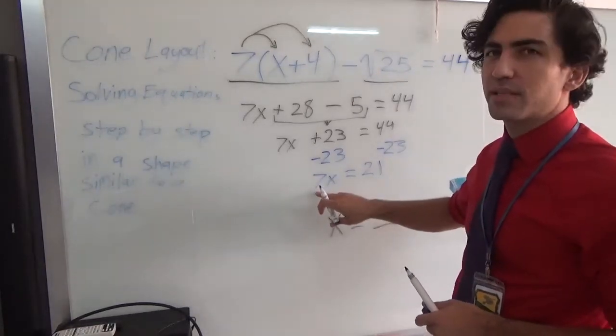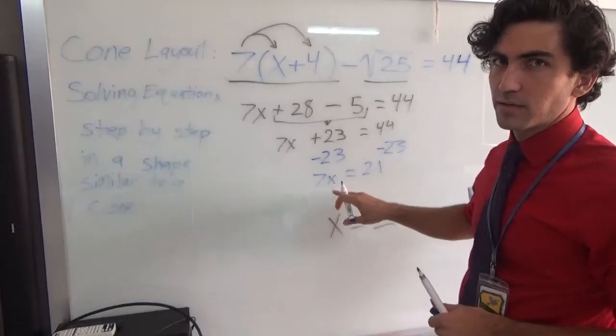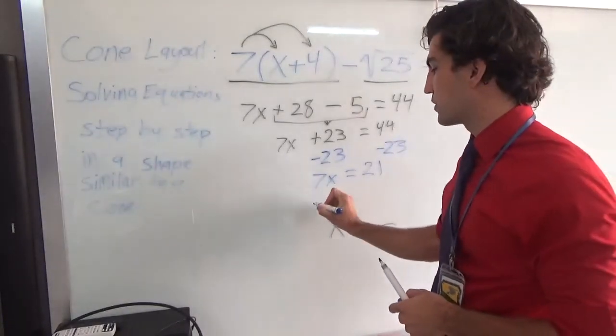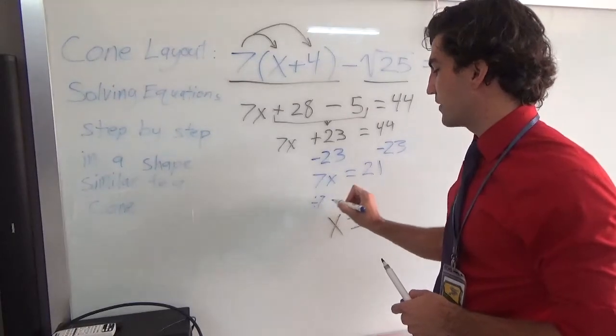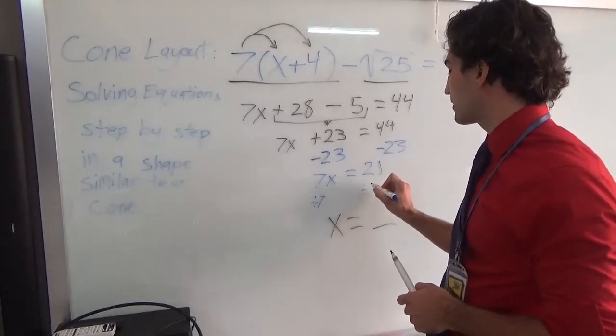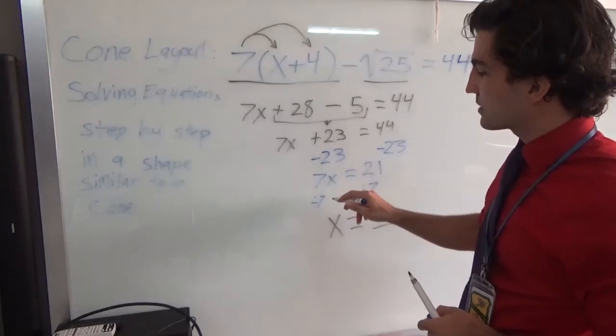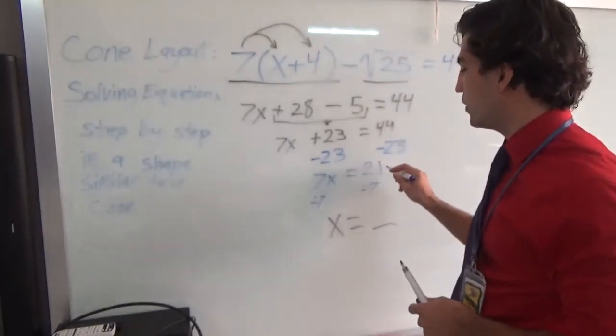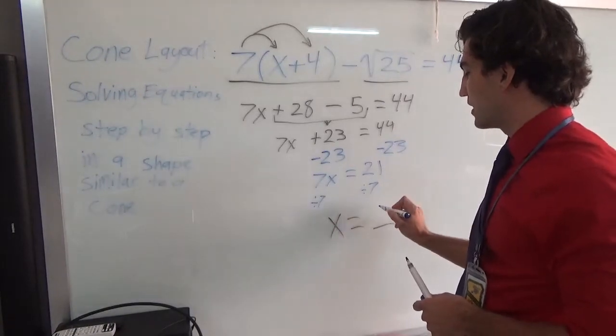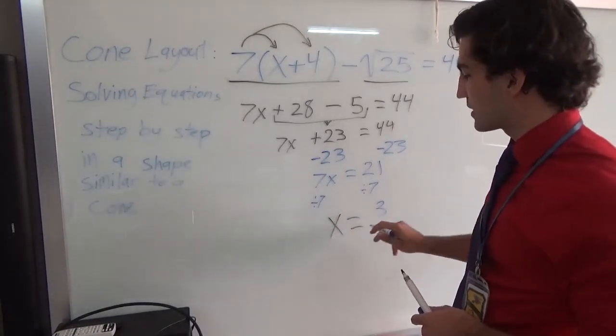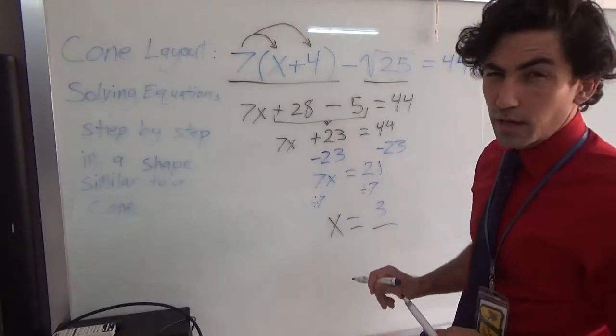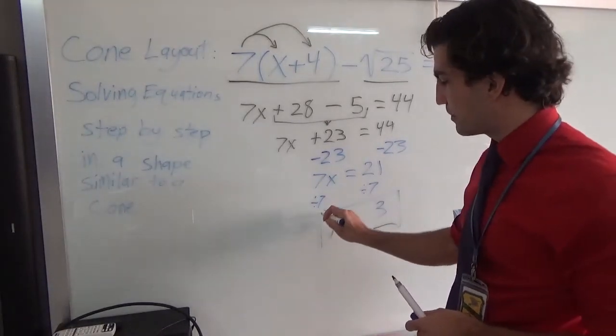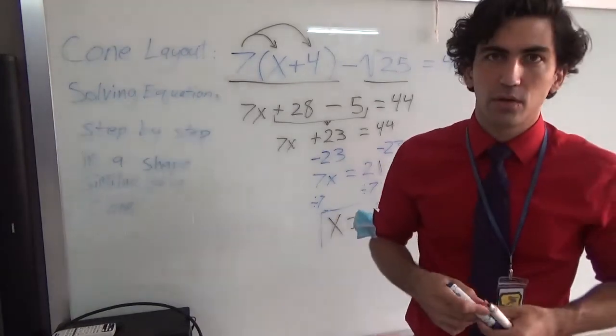I need to get rid of this 7. Right now, the 7 is multiplying. So I need to do the opposite. I need to divide by 7. So I will show that I'm dividing by 7. And then on this side, I will also divide by 7. So 7x divided by 7 is just x. 21 divided by 7 is 3. Which means that our x is equal to 3. And when you're done, generally, I will want you to put a box around your answer.